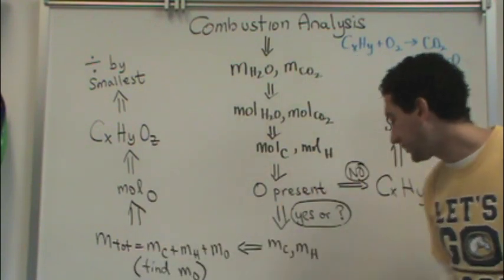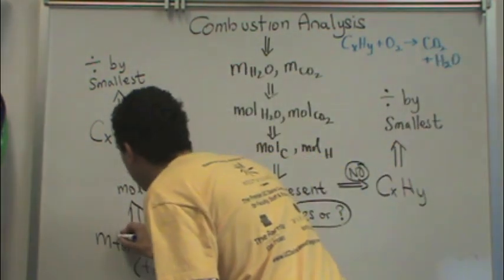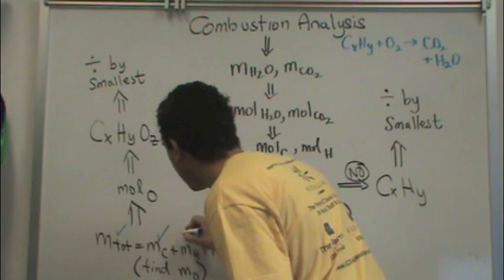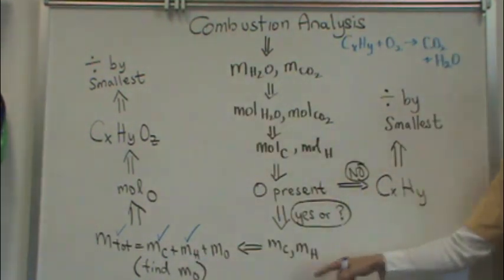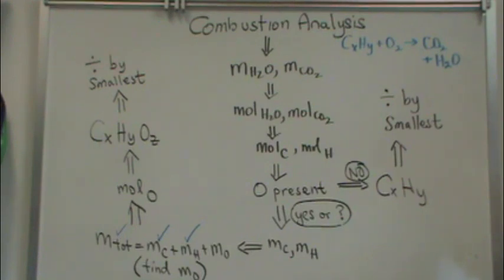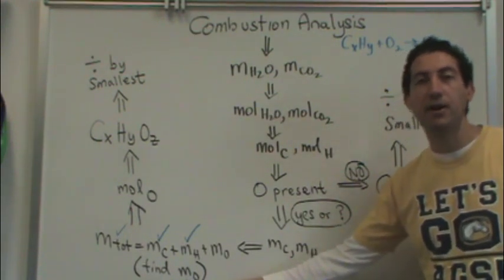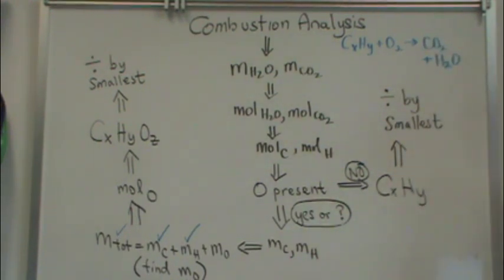So if you're given the total mass, and you've just found the masses of carbon and the masses of hydrogen, then what you're going to do next is find the mass of oxygen. So you're solving for the mass of oxygen.